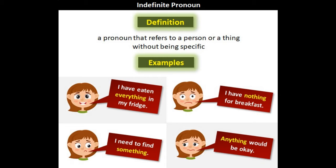لہٰذا اس جملے میں لفظ 'all' indefinite pronoun ہے۔ چلیں اب انگلیش میں definition سمجھتے ہیں — an indefinite pronoun does not refer to any specific person, thing, or amount; it is not definite. Some typical indefinite pronouns are: all, another, any, anybody, anyone, anything, each, everybody, everyone, everything, somebody, and someone.